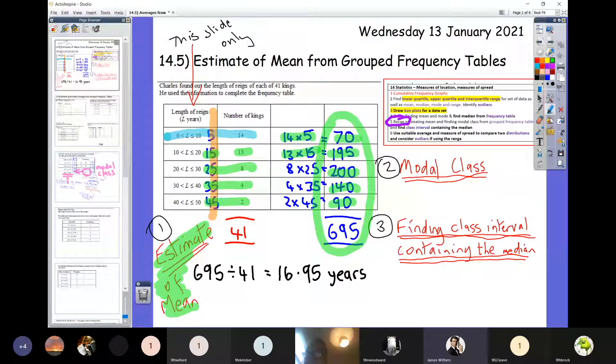Now other things they can ask you, so that's estimating the mean. The other thing they could ask you is just like yesterday, remember we had the mode, which is what happened most often. Well it's the same thing here. What happened most often? We had 14 kings reigns, that's the biggest number of kings.